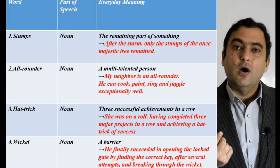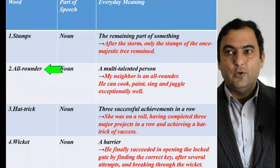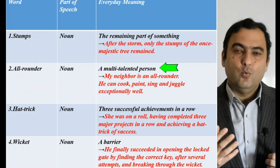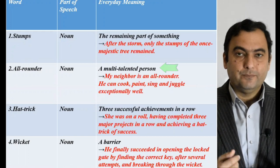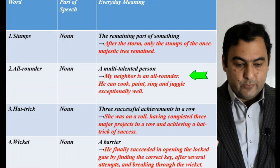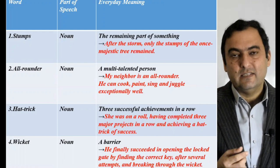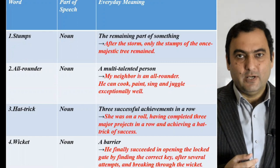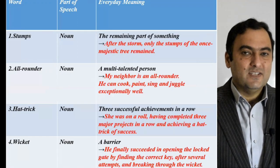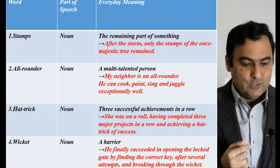The next very common noun is all-rounder. An all-rounder is a person with many talents. An example sentence: my neighbor is an all-rounder — he can cook, paint, sing, and juggle at the same time. Are you an all-rounder? If you are, tell me in the comment section what different skills you have — share those skills with us.